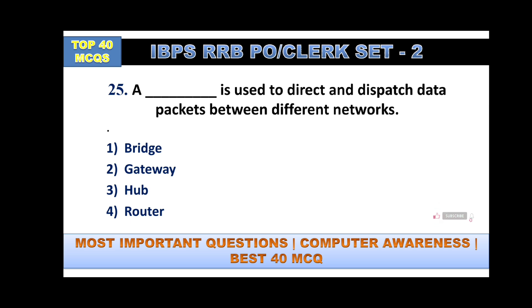A device used to direct and disperse data packets between different networks is a router. The function of a bridge is to connect two or more LANs. The function of a gateway is to connect two or more networks of different protocols.